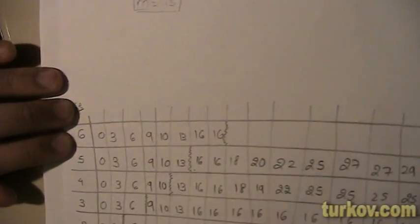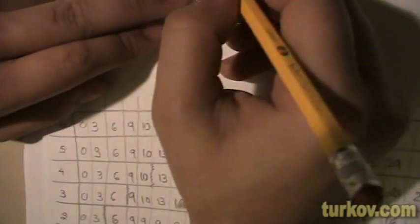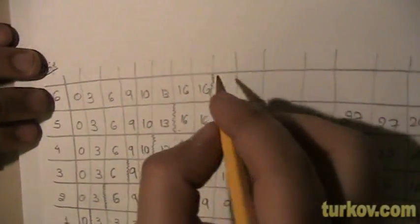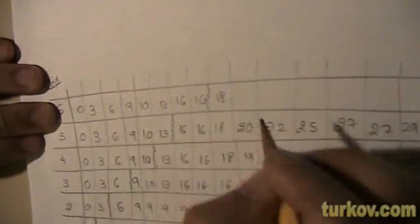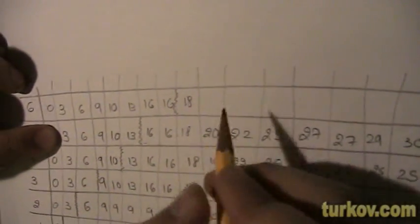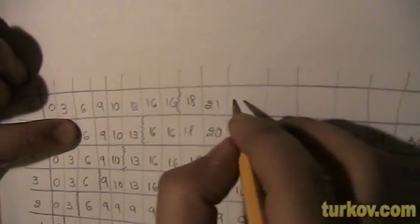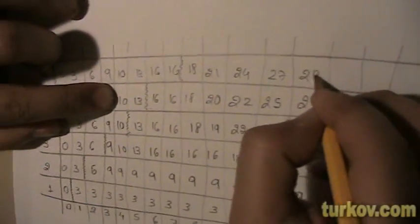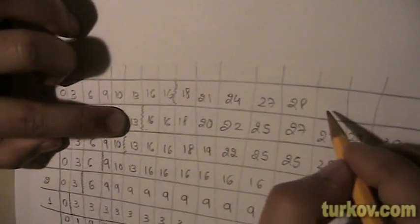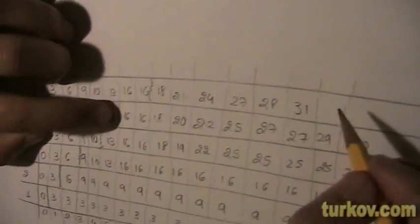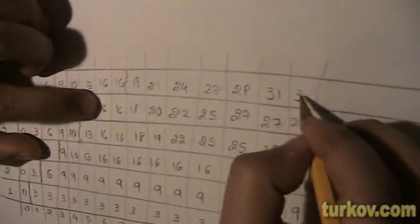For row 6, copy values up to the bar. The profit of item 6 is 18. So 18 plus 0 equals 18. Then 18 plus 3 is 21. Then 18 plus 6 is 24. Then 18 plus 9 is 27 versus 28 — take 28. Then 31. Then 34. So the maximum profit is 34.